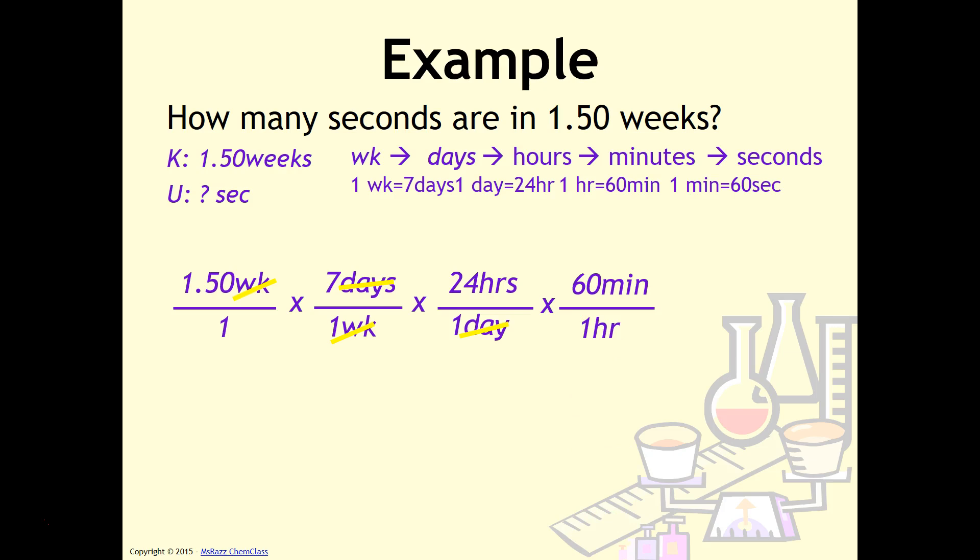Again, I'm not quite there yet. I need to go one more step because hours and hours will cancel and leave me with minutes, but I need seconds. And so the last conversion factor will be one minute on bottom and 60 seconds on top. And when I do that, minutes and minutes cancel and I'm left with a unit of seconds, which is exactly what I want.